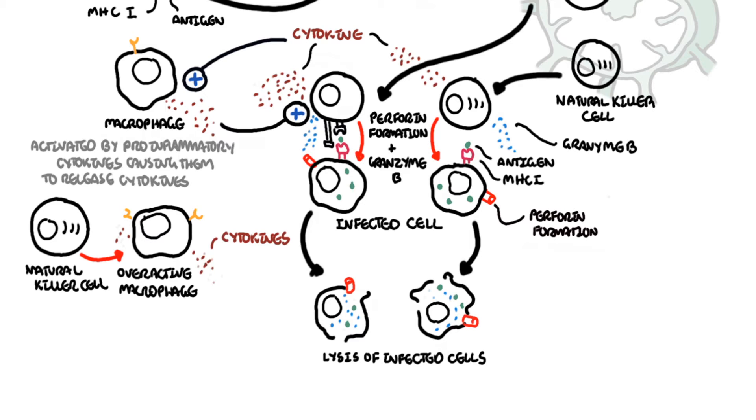In hemophagocytic lymphohistiocytosis, we have a hyperactive immune state. There is loss of control. The hyperinflammatory dysregulated immune state is thought to be caused by the absence of normal down-regulation of the macrophages and the lymphocytes.